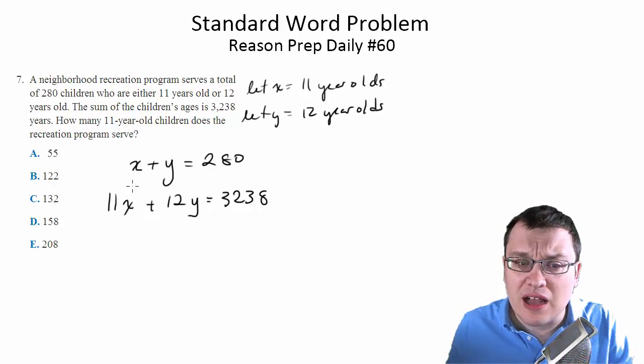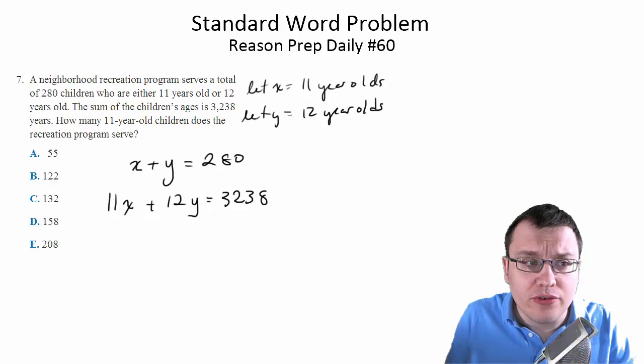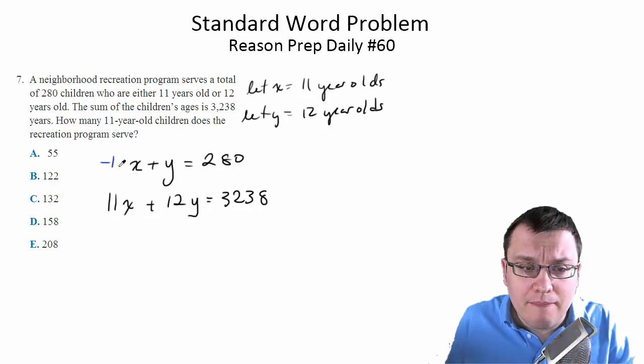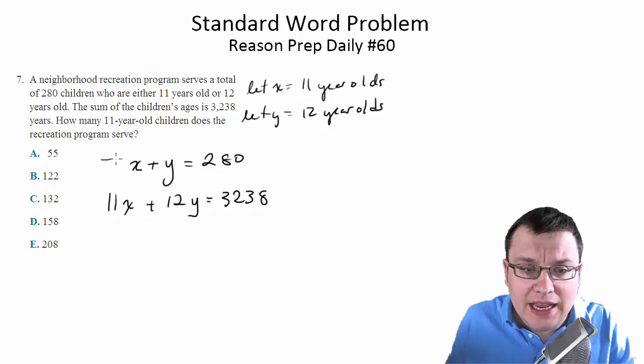Let's go ahead. We're trying to solve for x because that's the number of 11-year-olds. So let's multiply the top by negative 12.